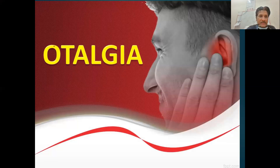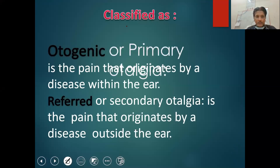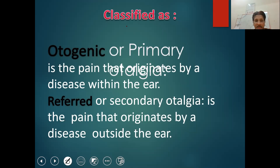Otalgia — 'otal' is the word root and otalgia stands for pain in the ear. We have divided the otalgia topic into two segments. Number one: the structures which are directly involved in the pain, where the ear itself is the cause of the pain — that is called primary otalgia, when the pain results from structures of the ear itself.